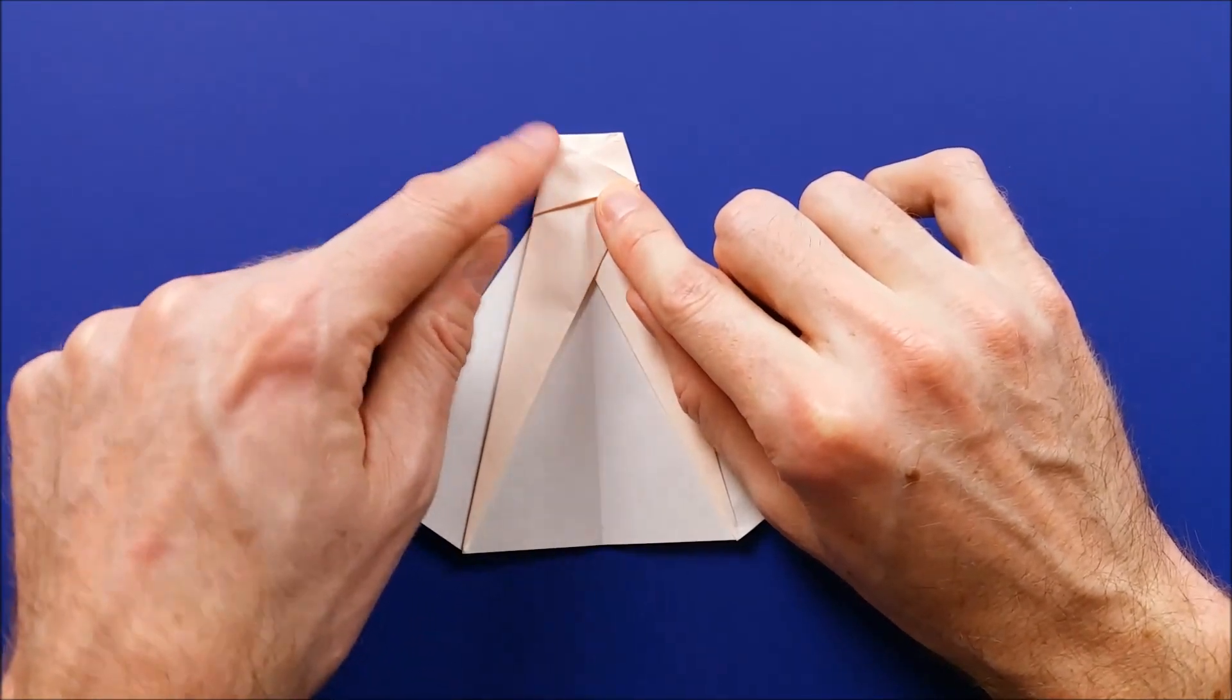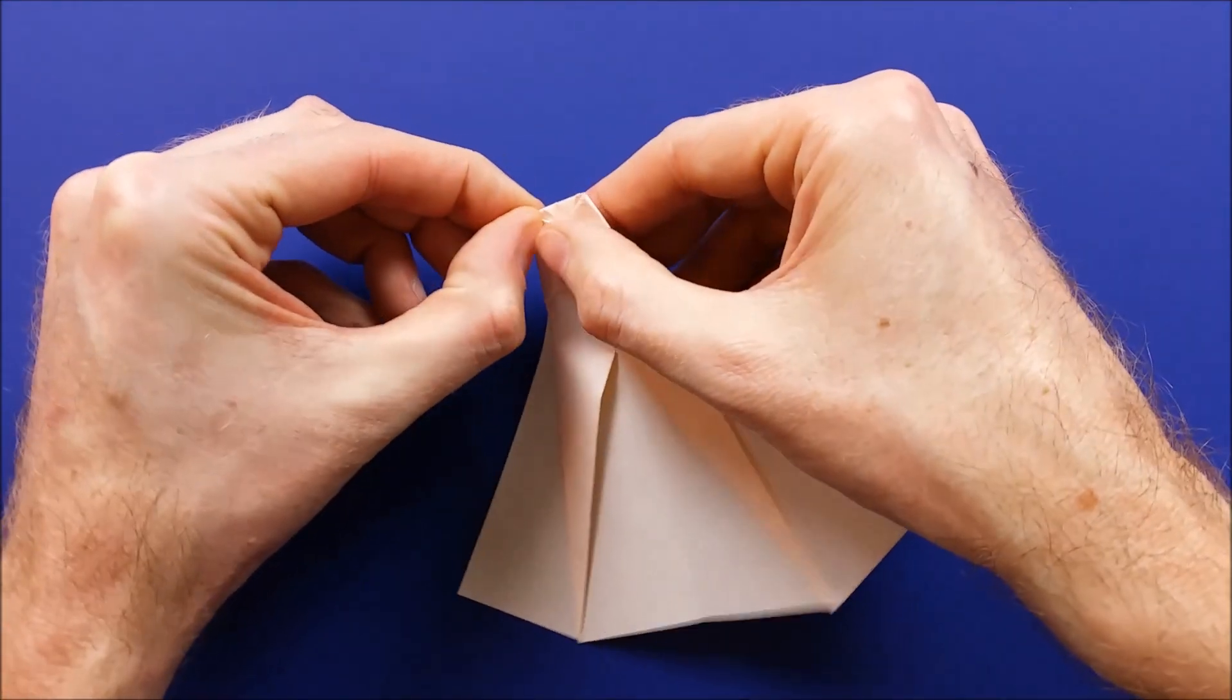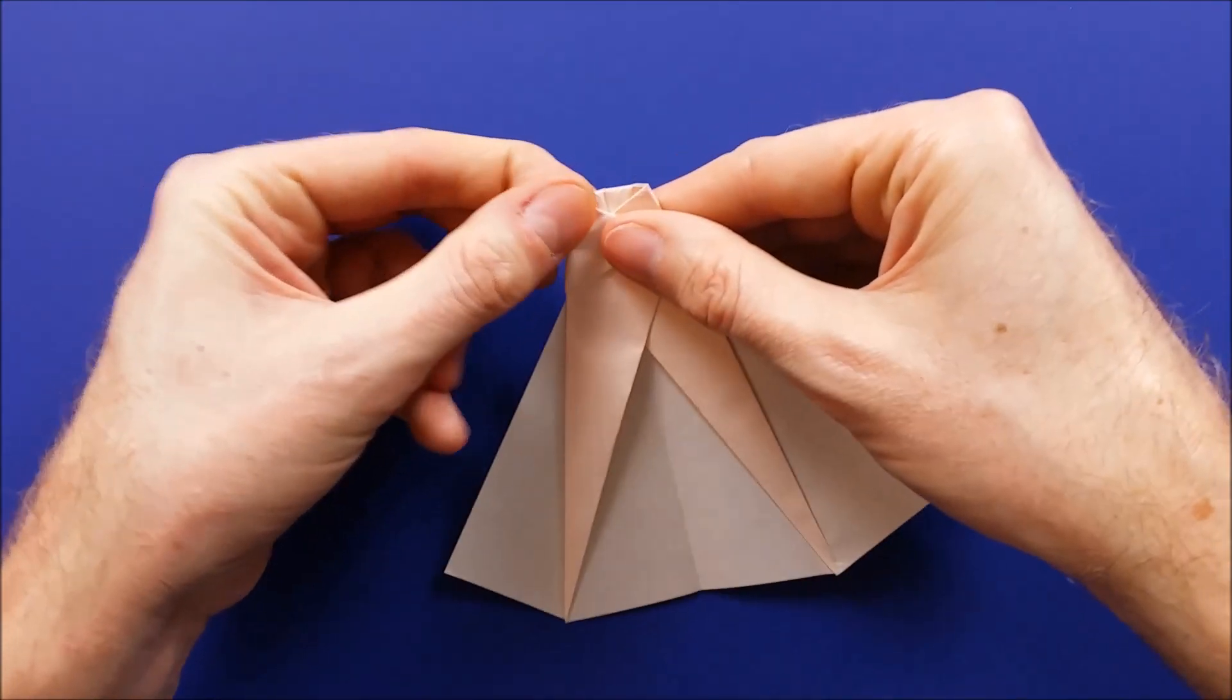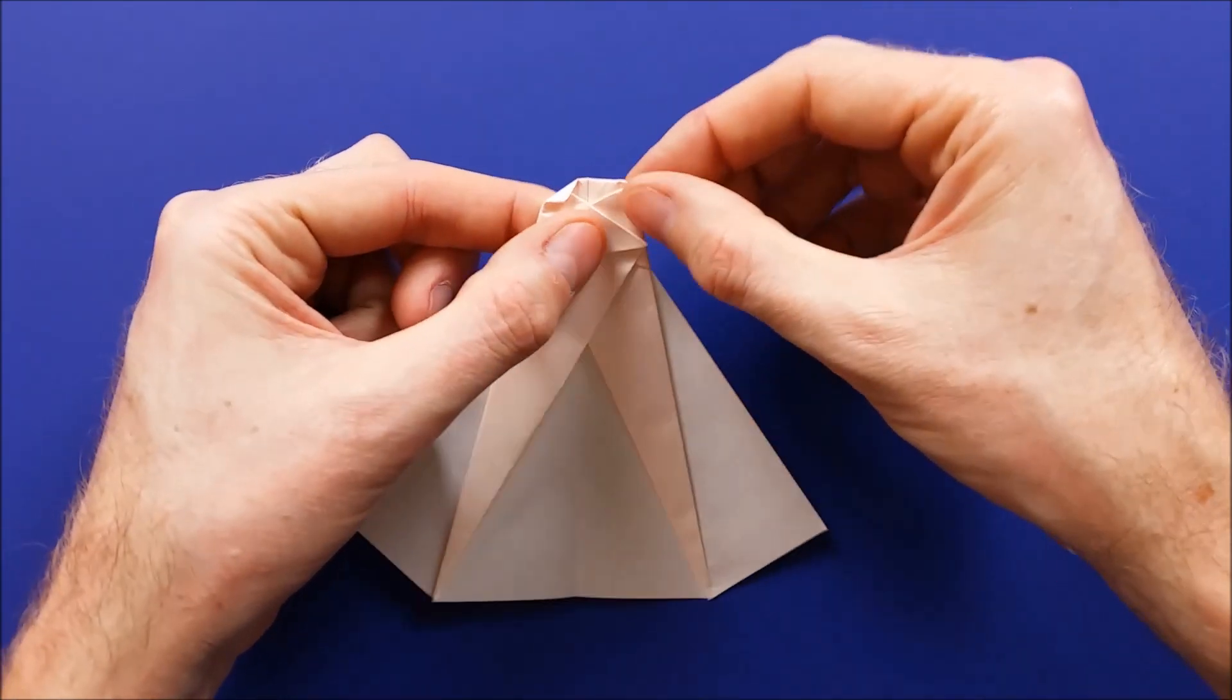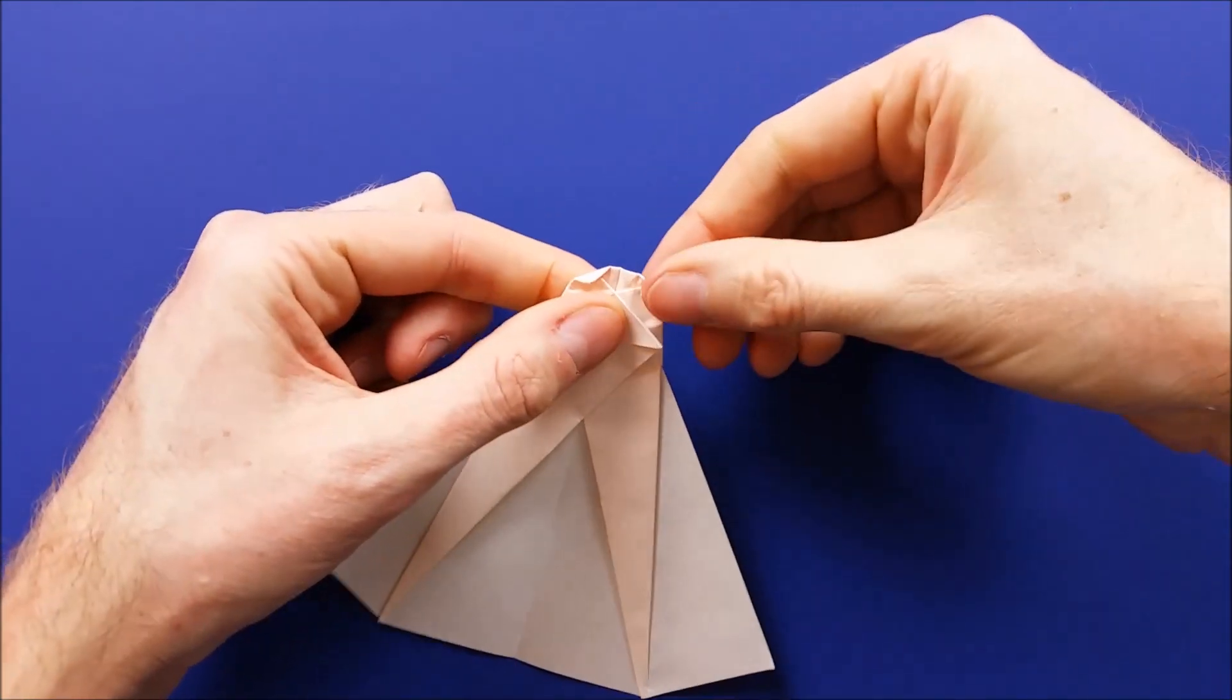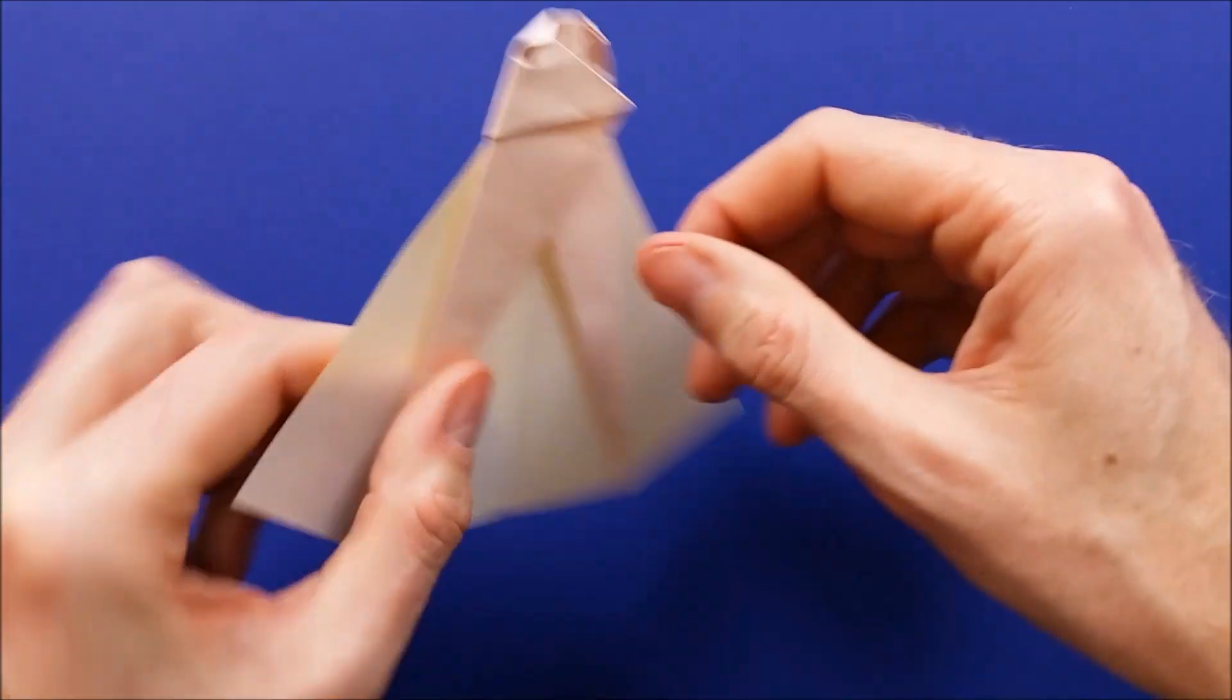And now we are going to round a bit those corners here by making a small fold. And it will help to stay, to make the model stay locked. Turn the model over.